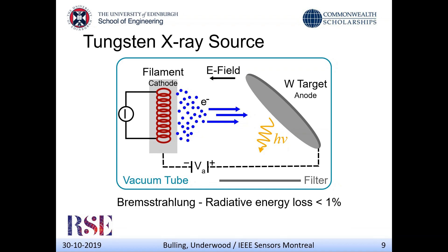With regards to the source of X-rays, we used a biological irradiator with a tungsten target. It creates electrons in a vacuum tube by heating a cathode or filament, which by thermionic emission creates electrons. An electric field is applied across the cathode-anode, which accelerates the electrons towards the target and generates X-rays. Those X-rays are generated by a mechanism called Bremsstrahlung, which is a radiative energy loss accounting for less than 1% of all energy loss, but significant enough for creating X-rays.